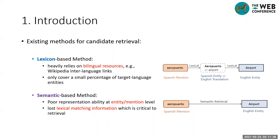There are two methods for this task: lexicon-based methods and semantic-based methods. The lexicon-based method relies on large-scale bilingual resources, such as Wikipedia interlanguage links. These methods are easy to implement, but they only cover a small percentage of target language entities. The semantic-based methods represent words of source language and target language in the same vector space, then conduct vector retrieval according to their vector similarities. However, this method loses lexical matching information, which is important for retrieval.